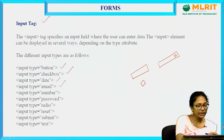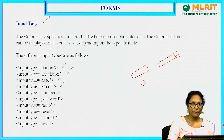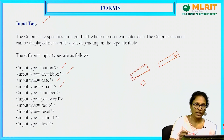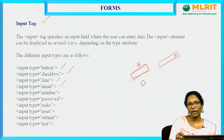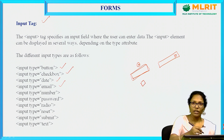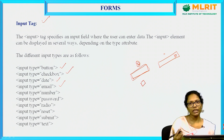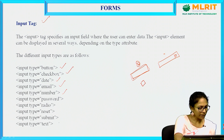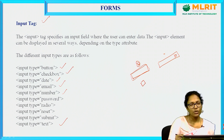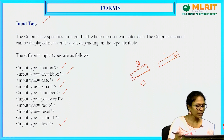Next is input type equal to email. If I give input type as email, it will generate a text field only, but it will expect a valid email ID from the user — meaning it should contain the '@' symbol. If you do not provide a valid email ID, it will give a warning message. Next, input type equal to number — this will accept only numbers. So for age, phone number, or salary fields, you can use the number type.